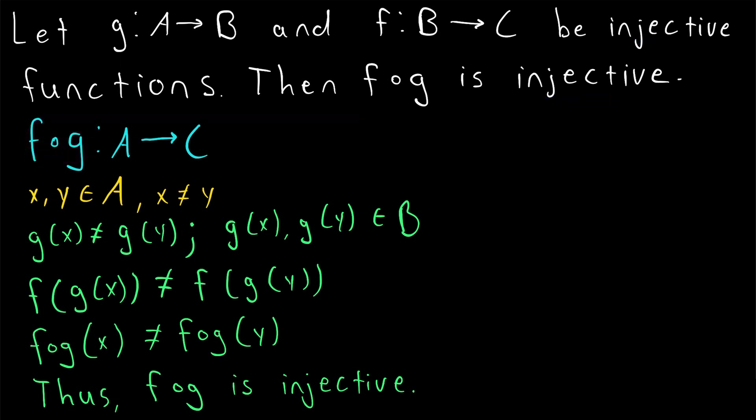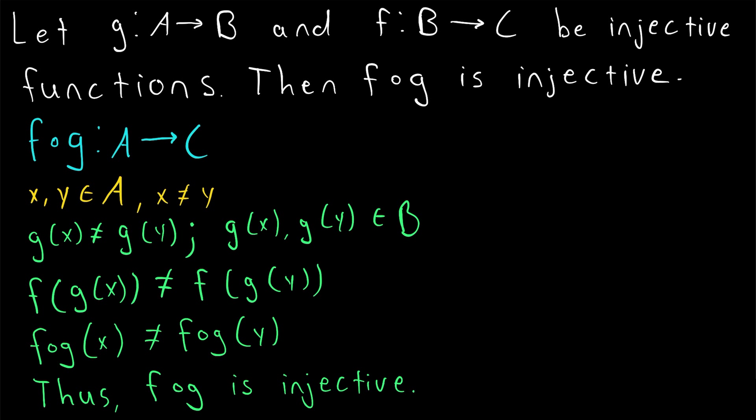And that shouldn't seem too surprising — especially if you represent this with a diagram, it would seem really obvious. This makes for an easy proof and suggests a couple of interesting questions. The first is: is the converse of this statement true as well? If we know that F of G is injective, does it follow that F and G are both injective?